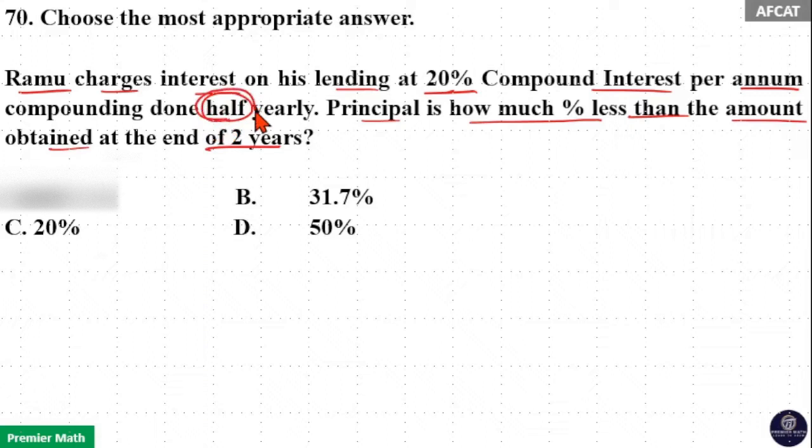Compounding done half yearly means every 6 months interest is added to the principle. 20% is the interest rate for 1 year, so for 6 months the interest rate is half of 20%, that is 10%. 10% means 10 by 100, that is 1 by 10. So 10 part is the principle for 6 months and 1 part is the interest for 6 months.